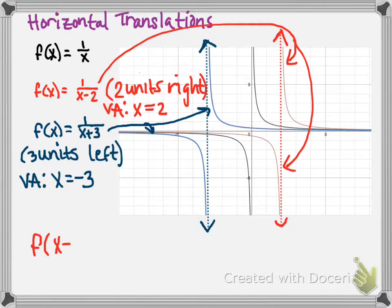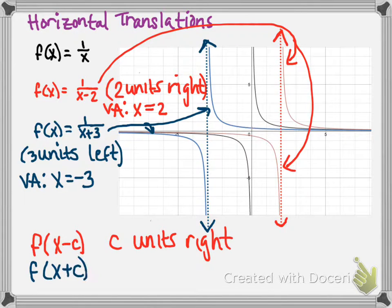In general, f of x minus c is c units right. f of x plus c is translated c units left.